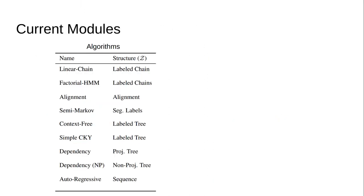Specifically, underlying TorchStruct are the following algorithms: linear chain or hidden Markov model algorithms; alignment algorithms such as dynamic time warping and biological sequence alignment; semi-Markov models for chunking and segmentation; tree algorithms for context-free grammar and CKY; dependency tree algorithms including both projective dynamic programming and non-projective spanning tree algorithms; and approximate algorithms for autoregressive models such as greedy decoding and beam search.